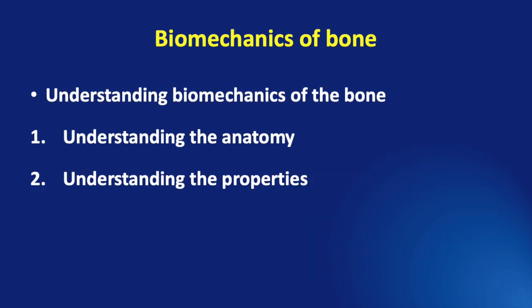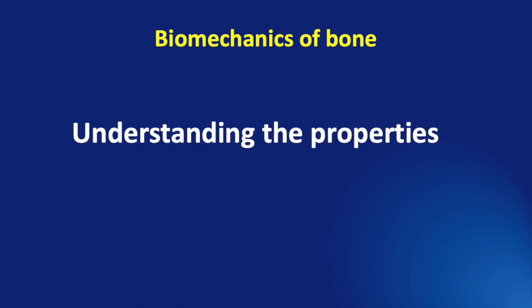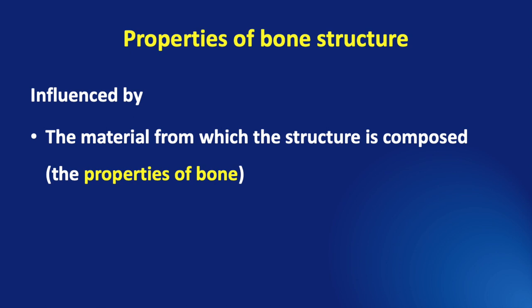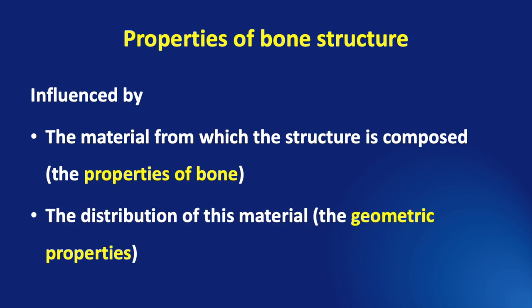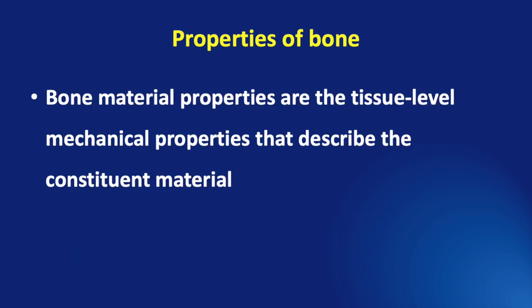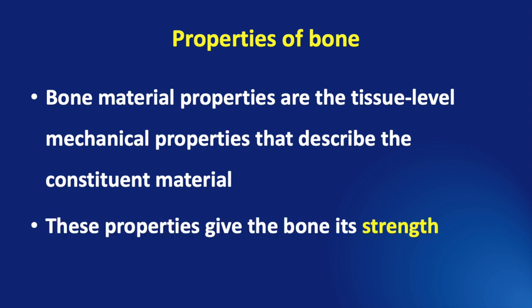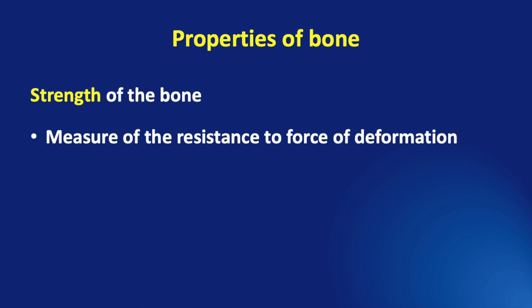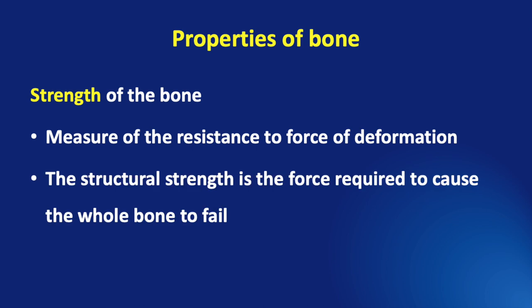In trying to understand the biomechanics of bone, we have now begun to understand the anatomy. Next, we need to understand the properties of the bone structure. These are influenced by the material from which the structure is composed — that is, the mechanical properties of the bone — and the distribution of this material, that is the geometric properties based on the form of the bone. Bone material properties are tissue-level mechanical properties independent of the size and shape of the bone, and they contribute to the strength of the bone. Bone strength is a measure of the resistance of the bone to any force of deformation, and structural strength is the force required to cause the whole bone to fail or fracture.